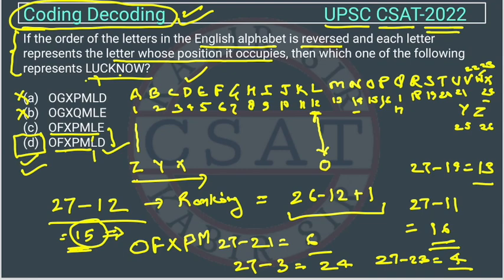I hope you guys got it, there are two ways to solve it. One is the question is saying that the alphabet is written in reverse order. Whatever number is coming, on which position, which letter is coming, you have to find it. L is at position 12 in normal alphabet. When we reverse it, what letter will come at position 12? For each letter we have to find it out and this is the new code: O, F, X, P, M, L, D. This is our answer.